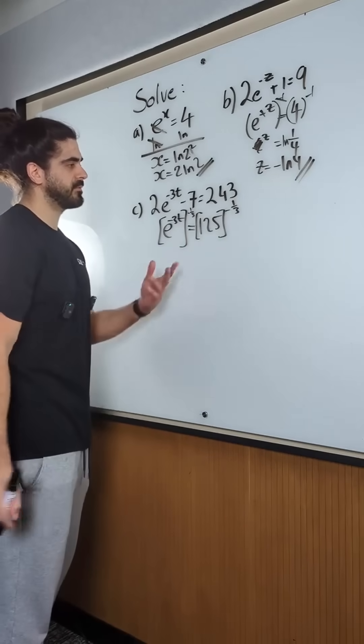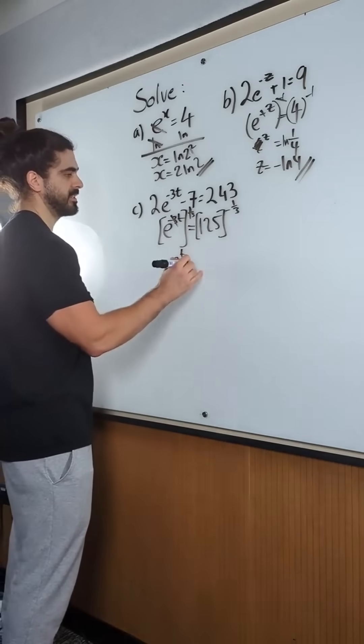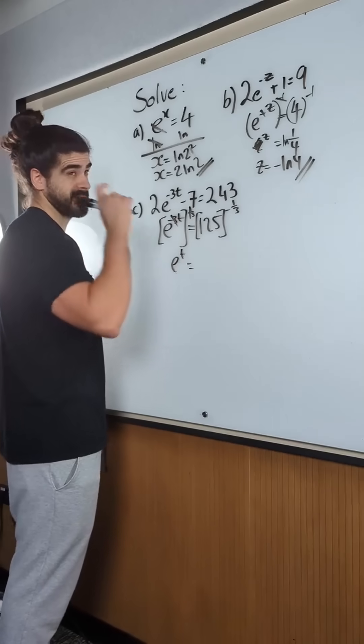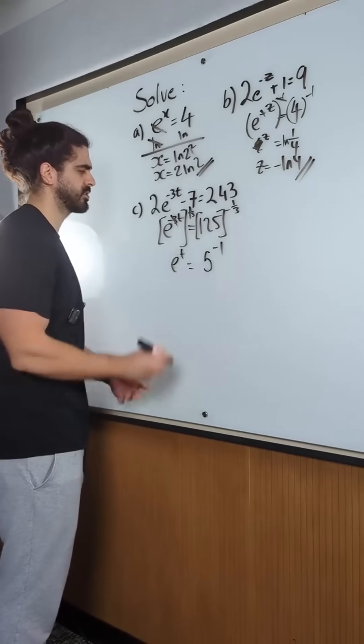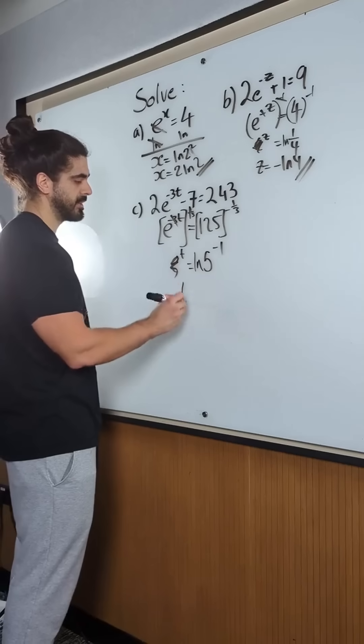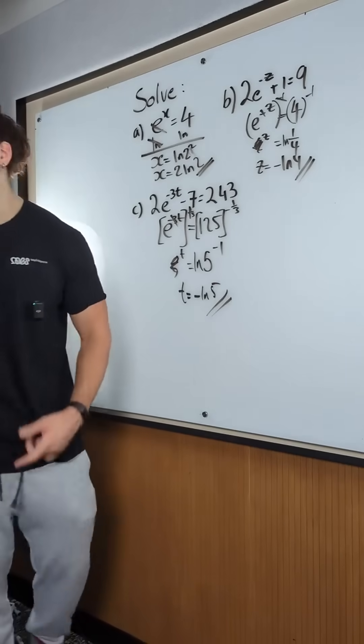The cube root of 125 is 5. The minus 1 reciprocates, so we get e to the power of t equals 5 to the minus 1, so one-fifth. I'm just going to write it like this, because when we take the natural log of both sides again, you bring down the minus 1. T is minus ln 5. Easy mate, so that's the point.